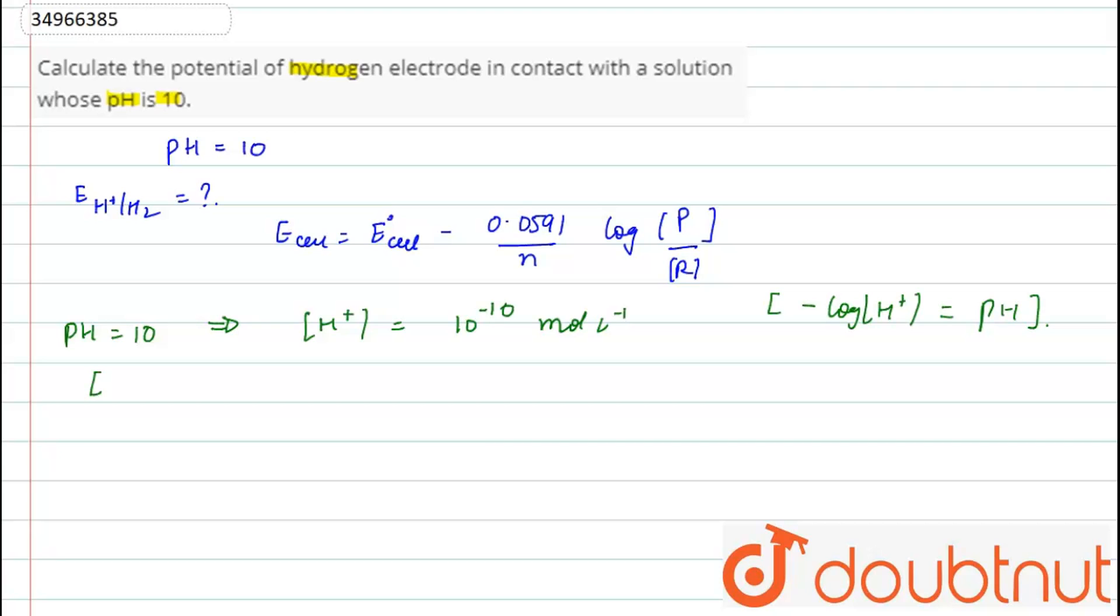Here, E of H+ to H2 will be equal to E0 cell. As we know, standard electrode potential of hydrogen is 0, as this is considered as the reference electrode,